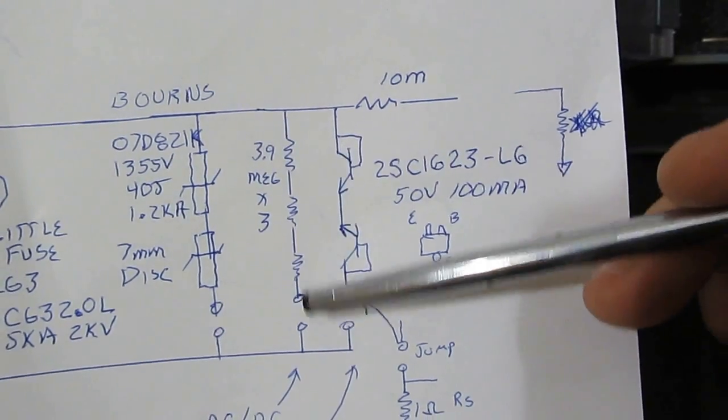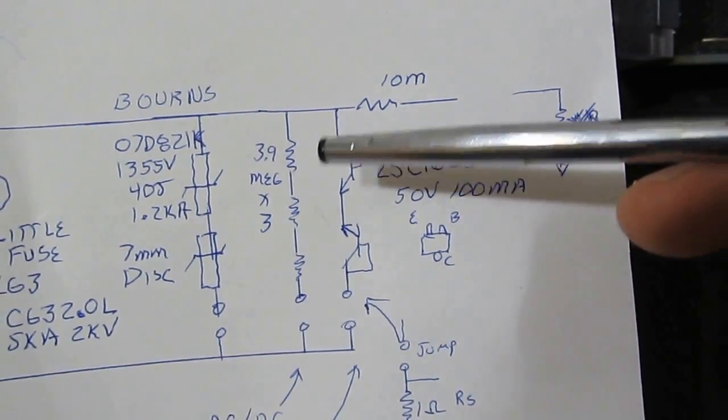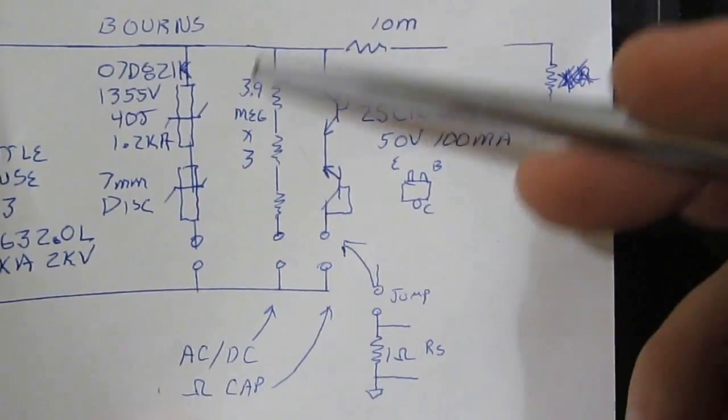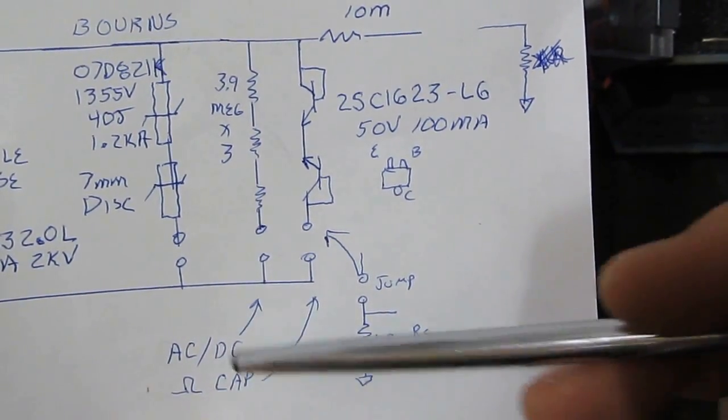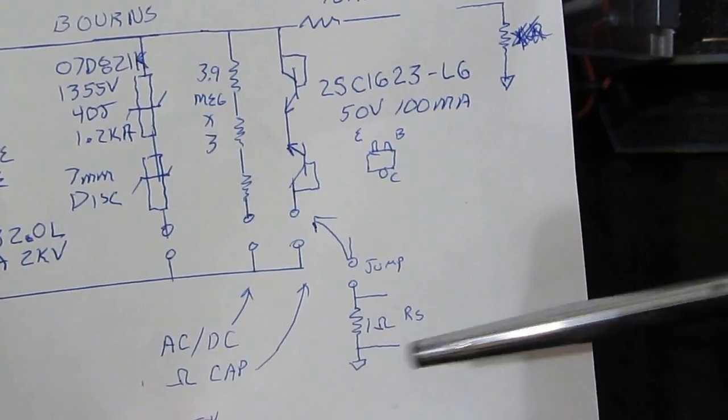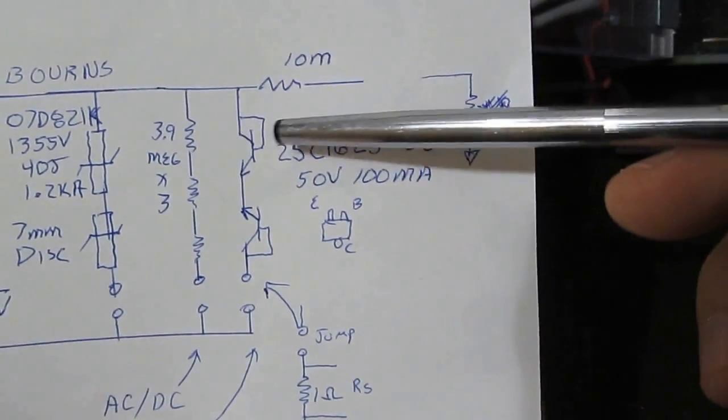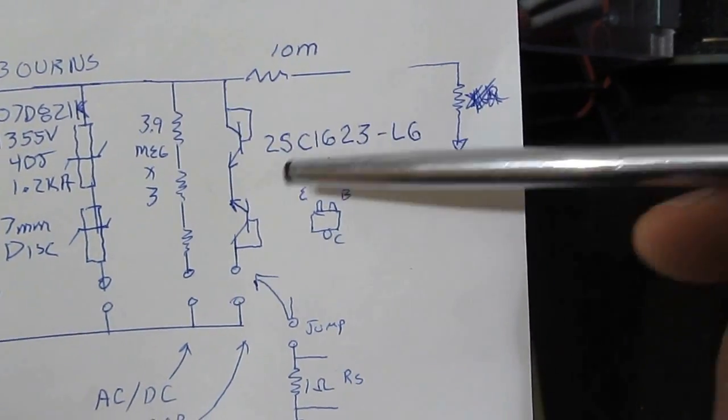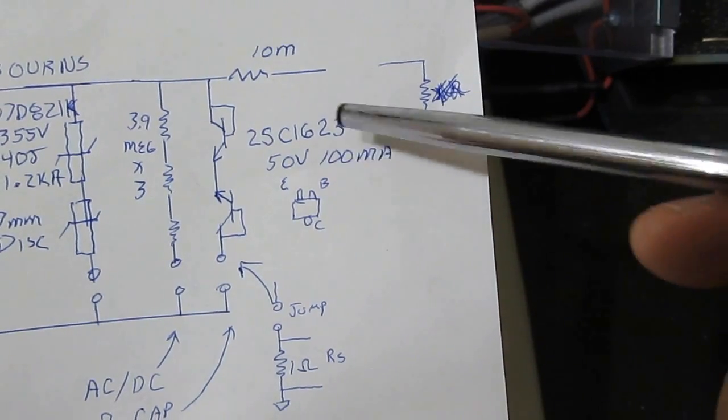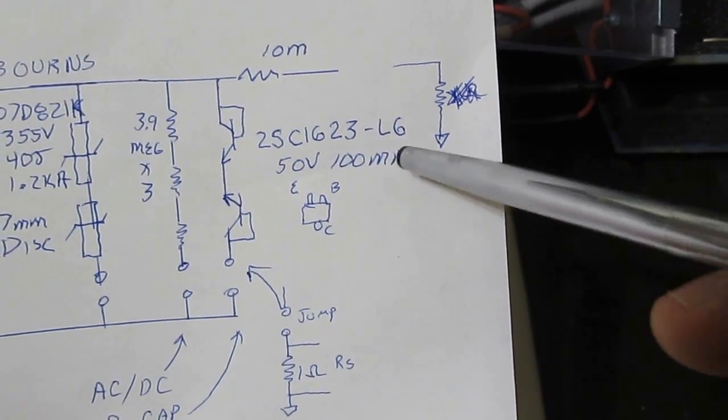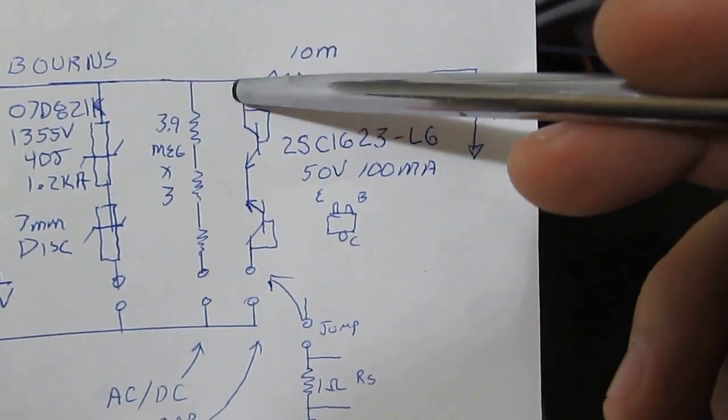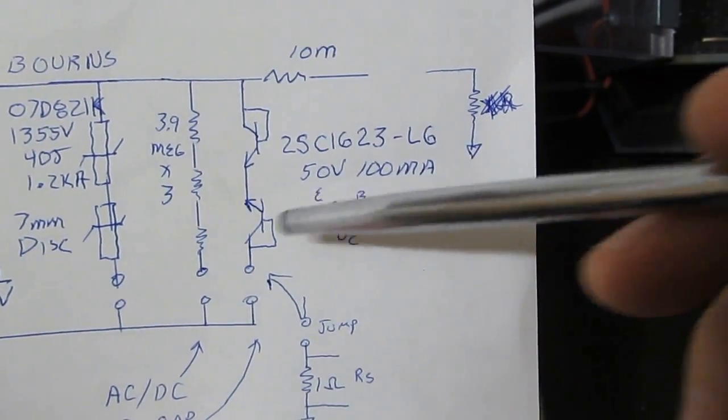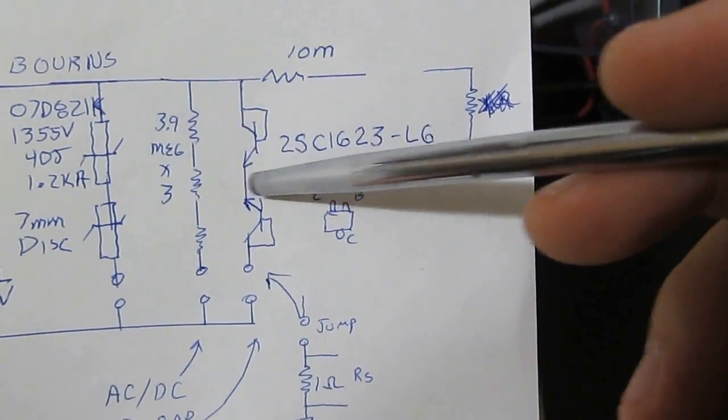To the right of that, I have three 3.9 meg resistors in series. In the meter that I'm modeling this after, these resistors are switched to ground when the meter is either in AC or DC volts. To the right of that, I have two transistors. These are a part number 2SC1623-L6. This is the actual transistor that's used in this particular meter. You can see the collector is tied to the base in both transistors, and they're tied emitter back-to-back. It's just basically two diodes back-to-back.